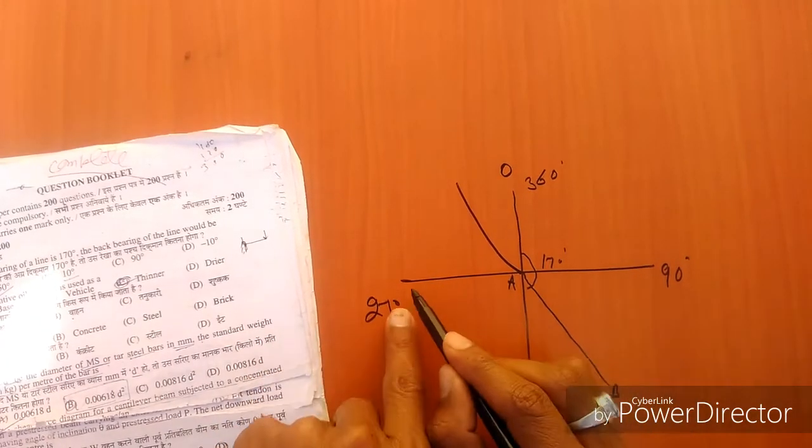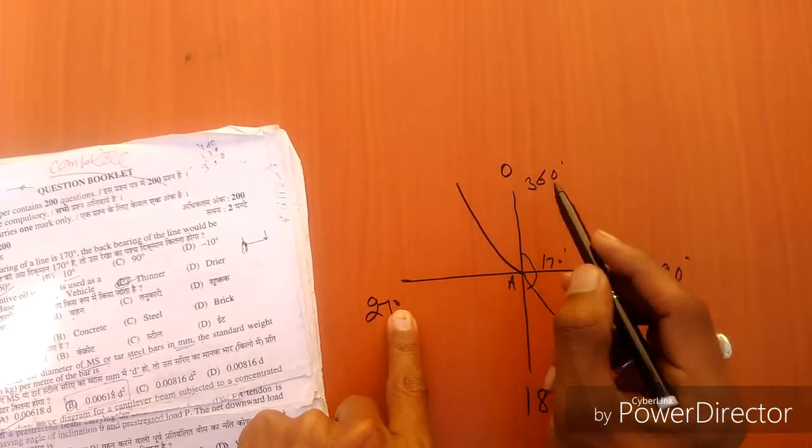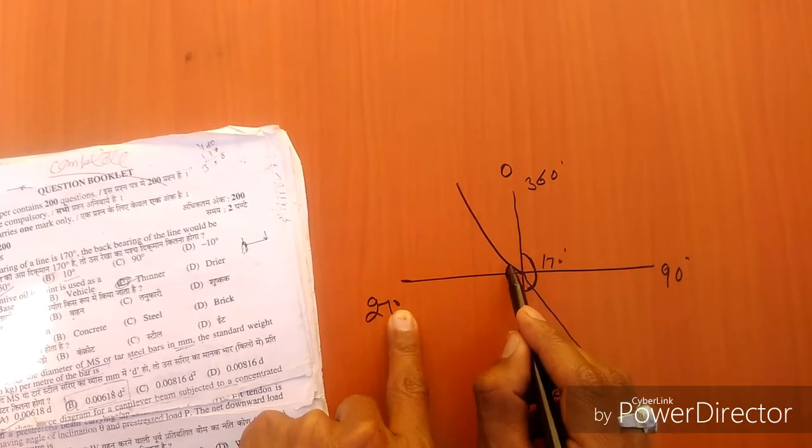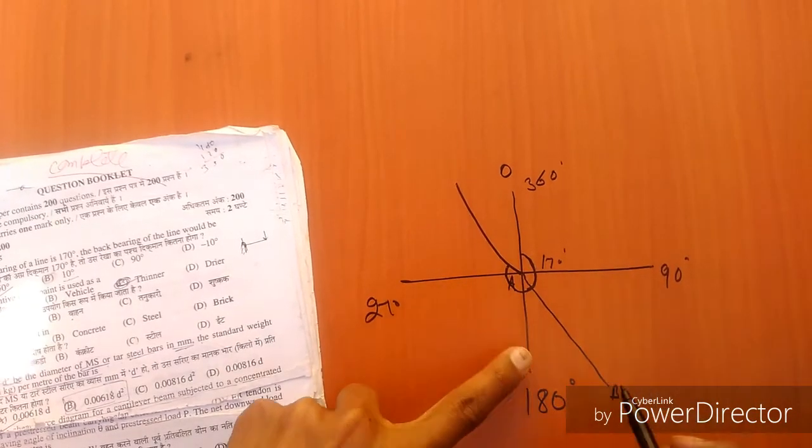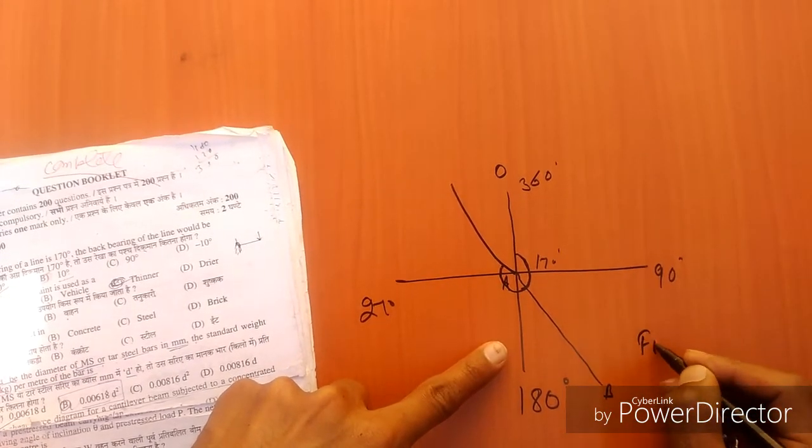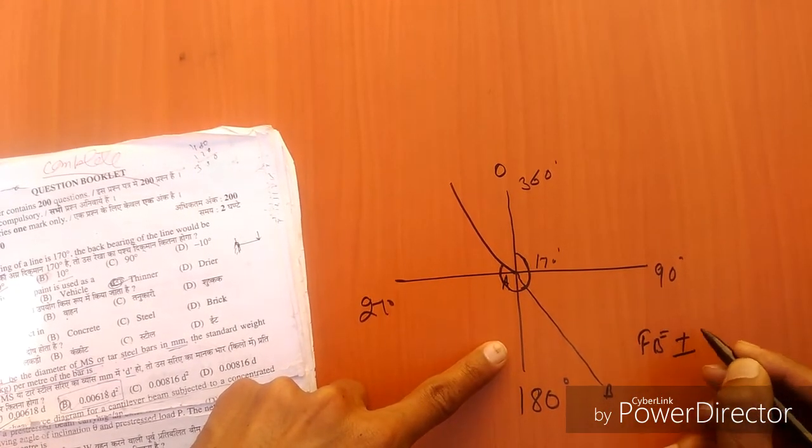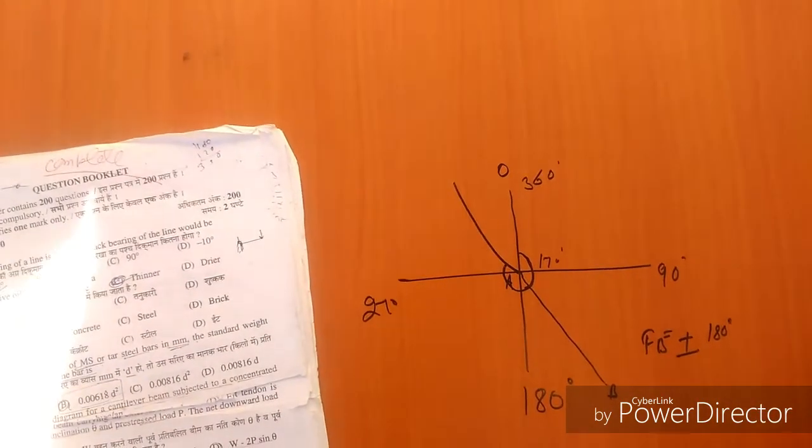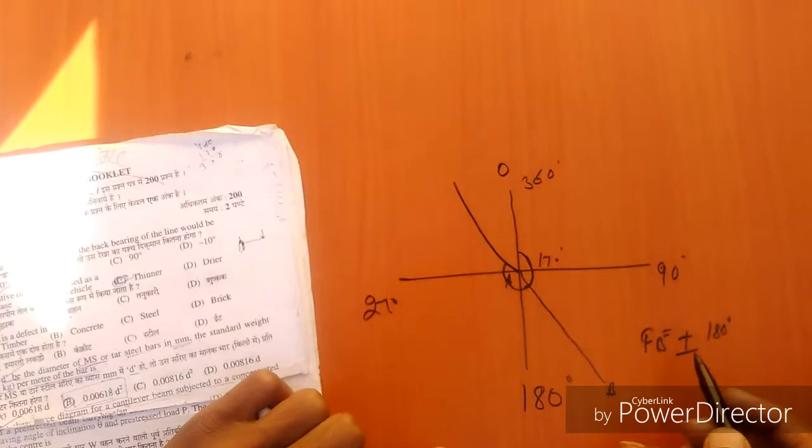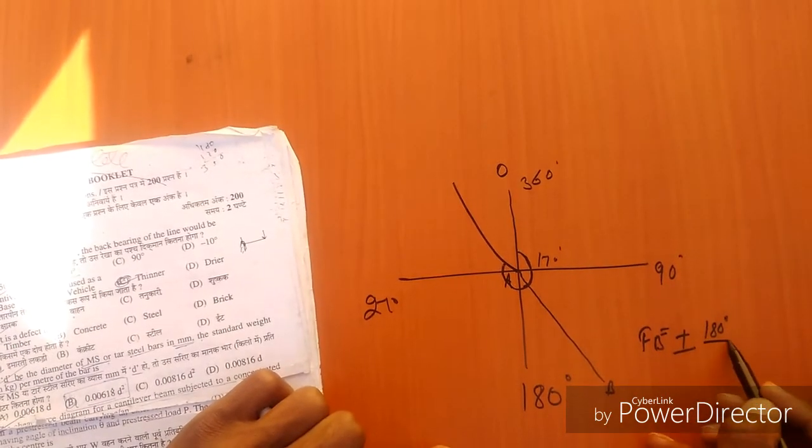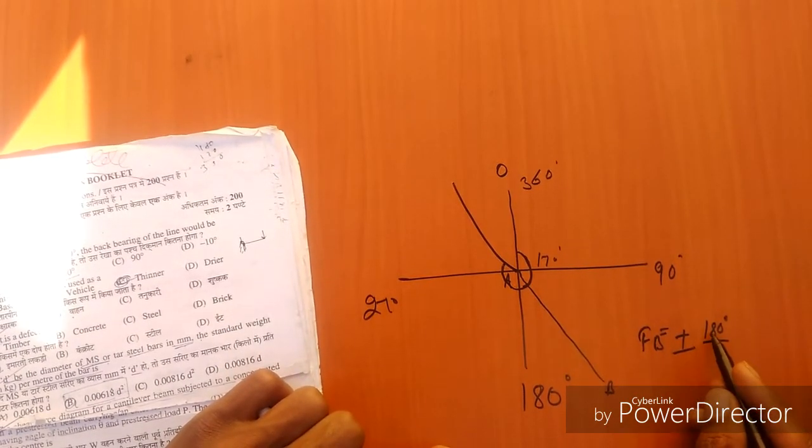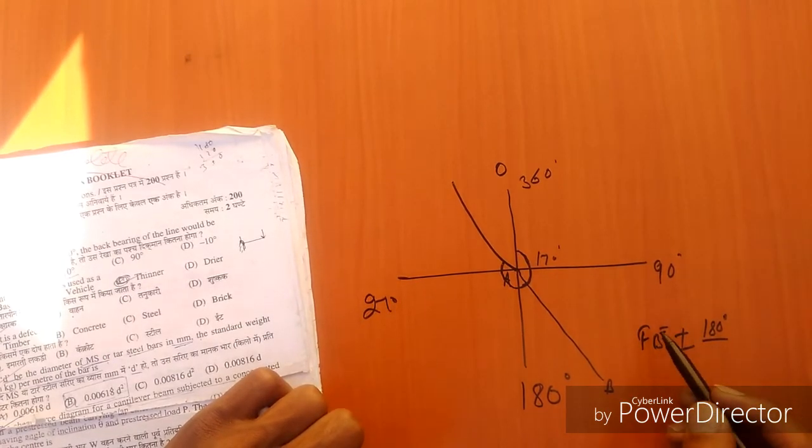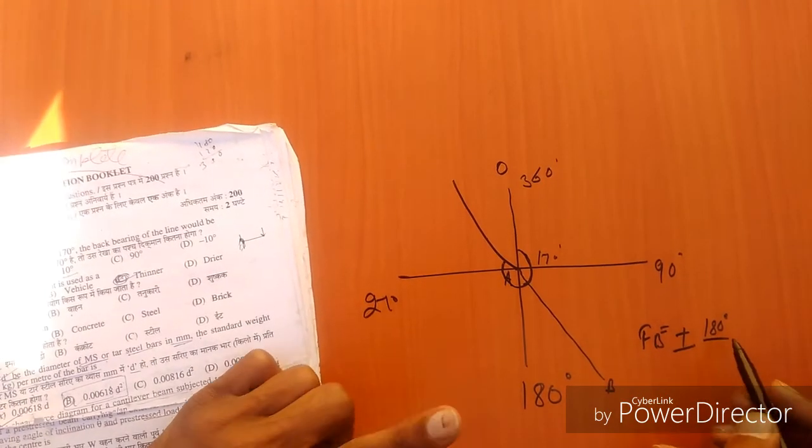If the value is less than 180 degrees, then you will add 180 to your value. If the value is greater than 180 degrees, then you will subtract 180 from your value.